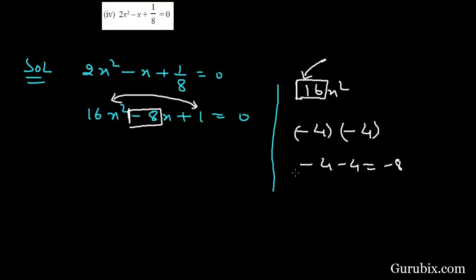So the factors are 16x² - 4x - 4x + 1 = 0. We have split the middle term in such a way. Now we shall take 4x common from first two terms.